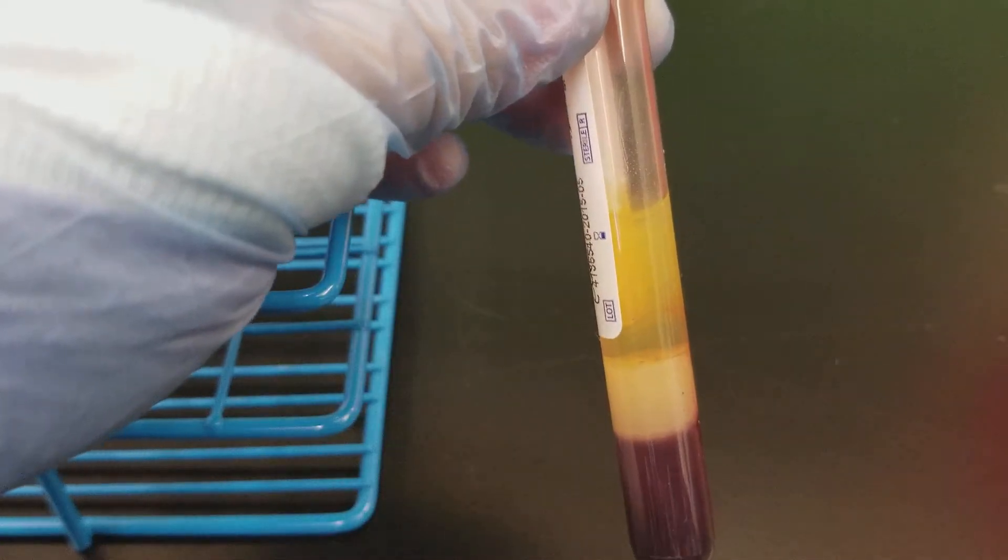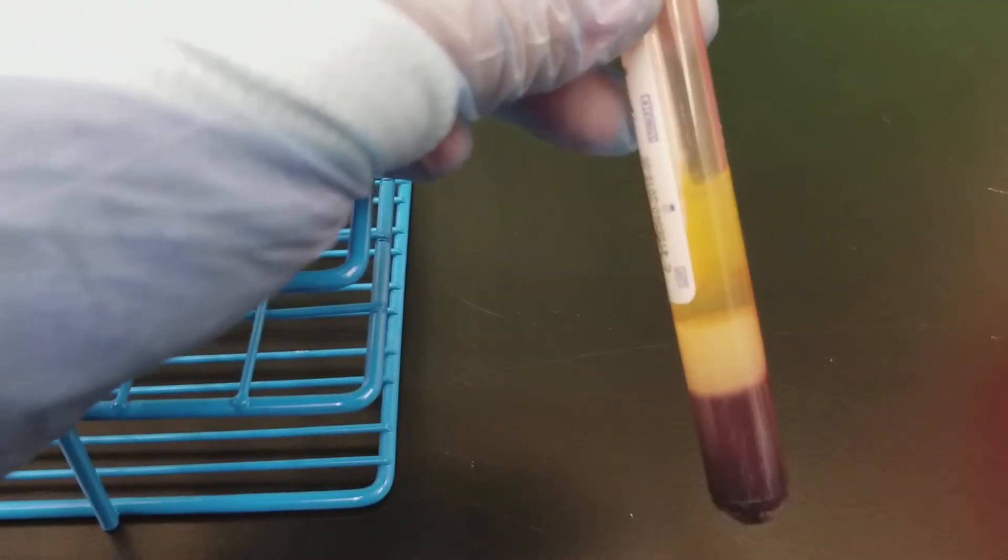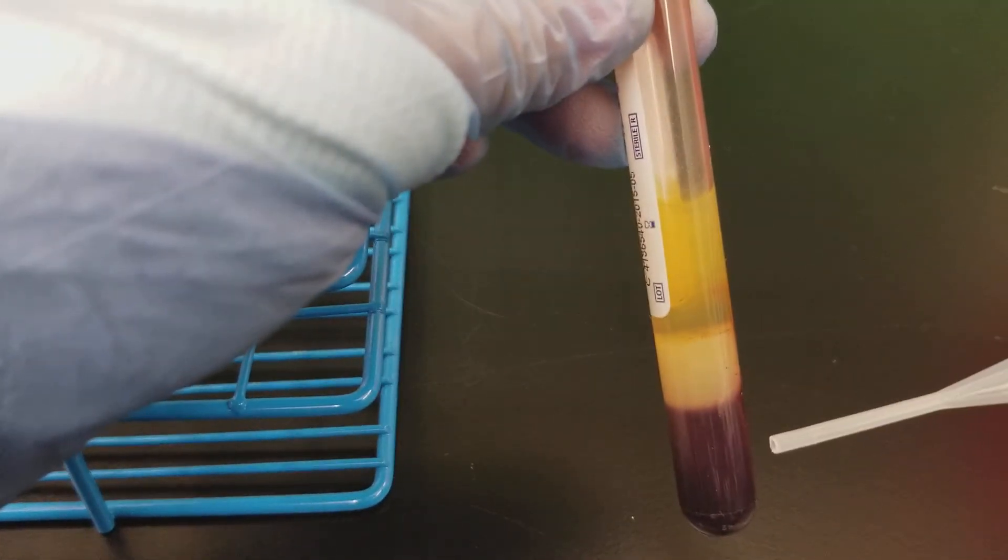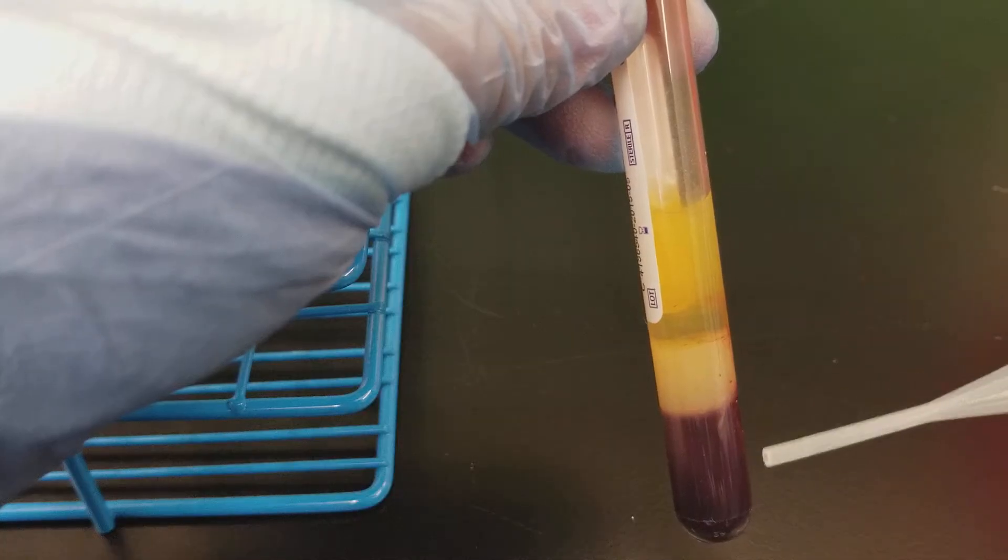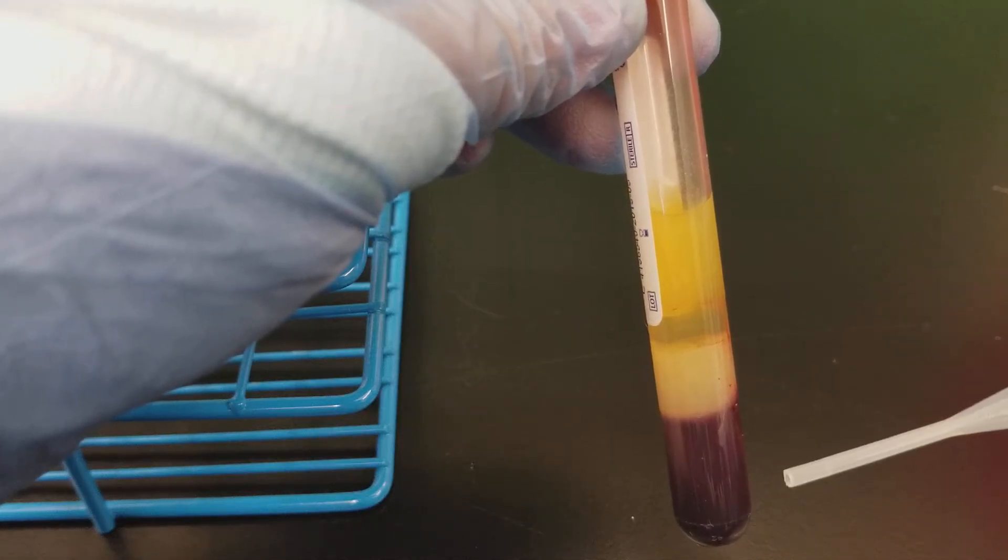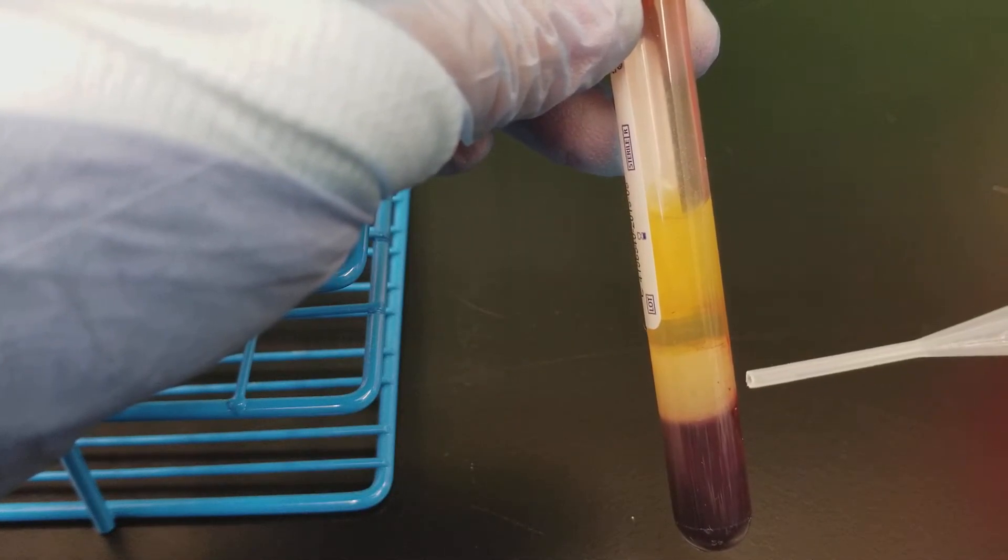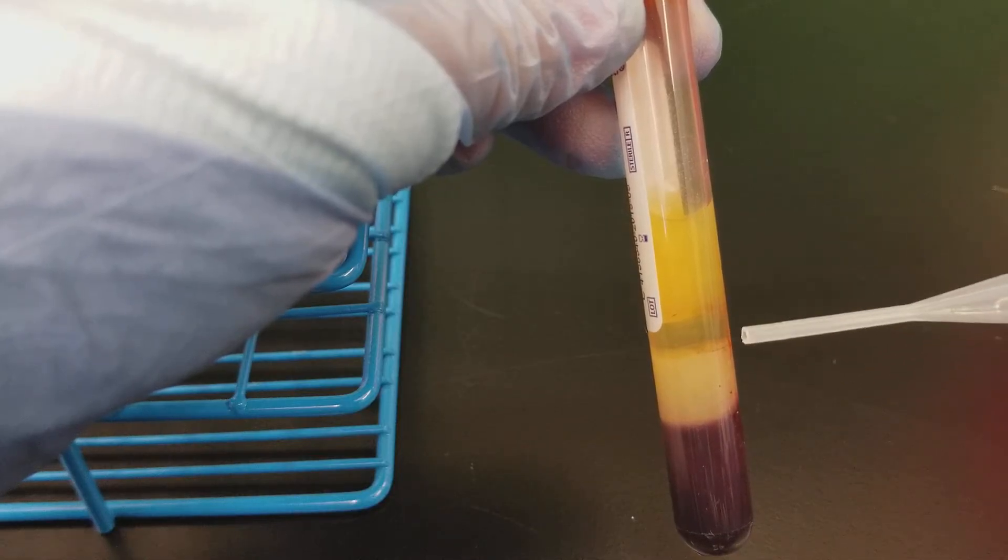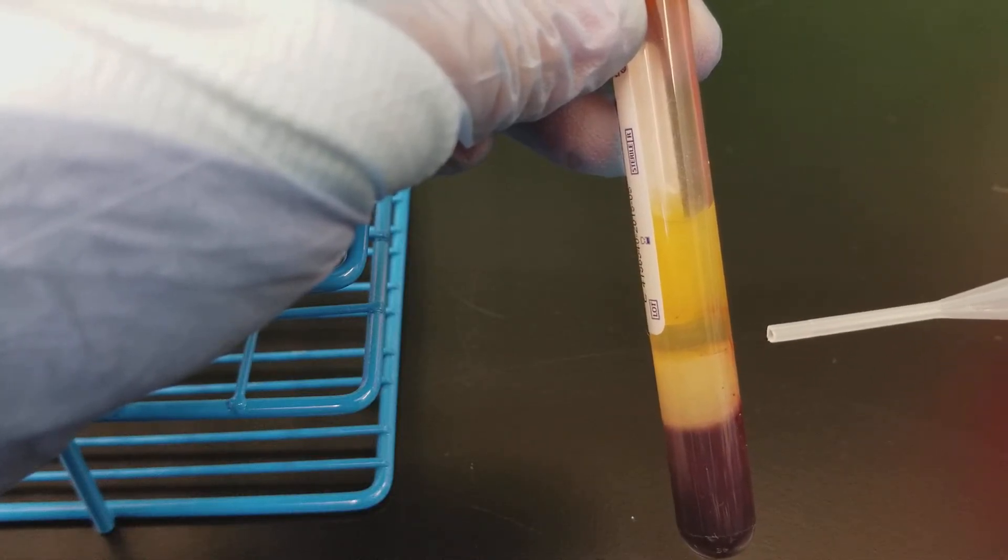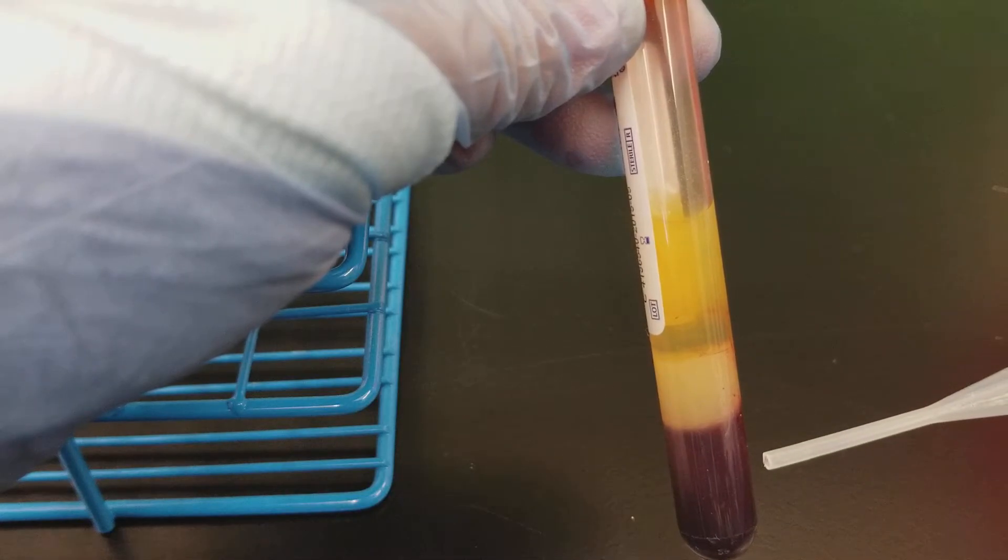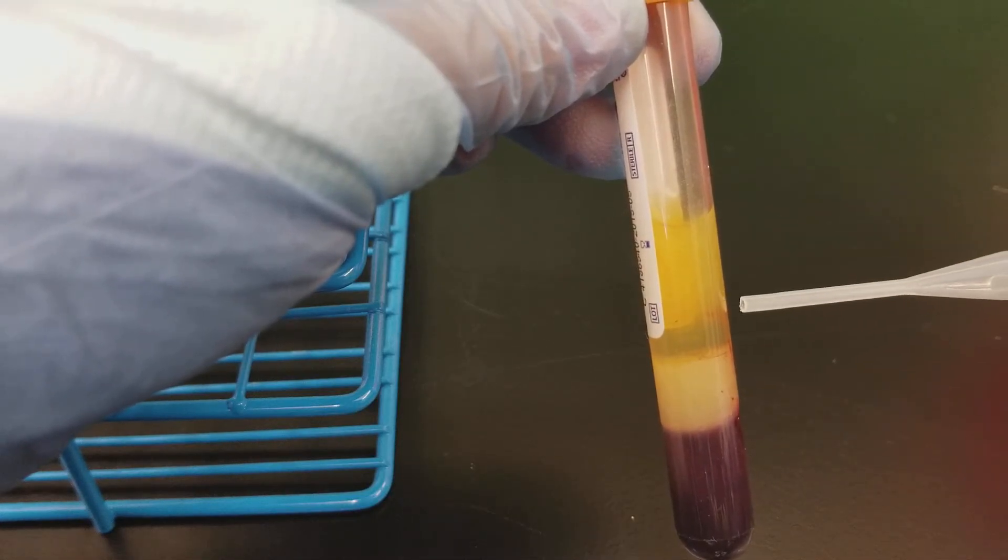This is a serum separator tube and if you'll notice all the red cells are down here. The cellular components are in the base of the tube separated by the gel here, which is to be expected because what we're trying to do in this tube is to separate the cellular components from the liquid components.